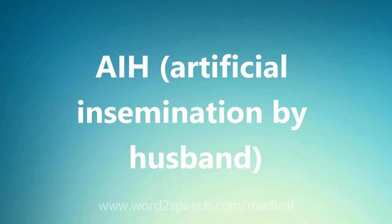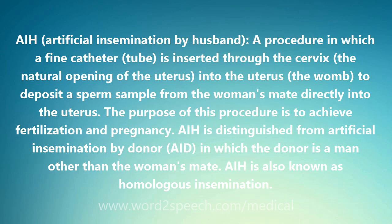AIH, Artificial Insemination by Husband. A procedure in which a fine catheter, or tube, is inserted through the cervix, the natural opening of the uterus, into the uterus, the womb, to deposit a sperm sample from the woman's mate directly into the uterus. The purpose of this procedure is to achieve fertilization and pregnancy.